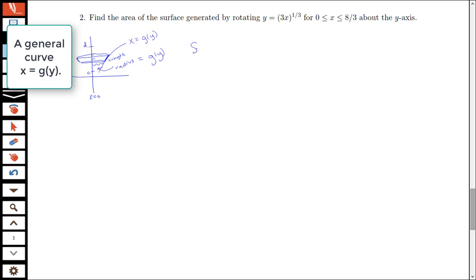So here I'm thinking about the general formula for surface area for a curve rotated about the y-axis as an integral from c to d of 2π times my radius, which now is g of y, times my length, which in terms of y is going to be the square root of 1 plus g prime of y squared, and then we have dy. So we'll look at this for our particular example now.